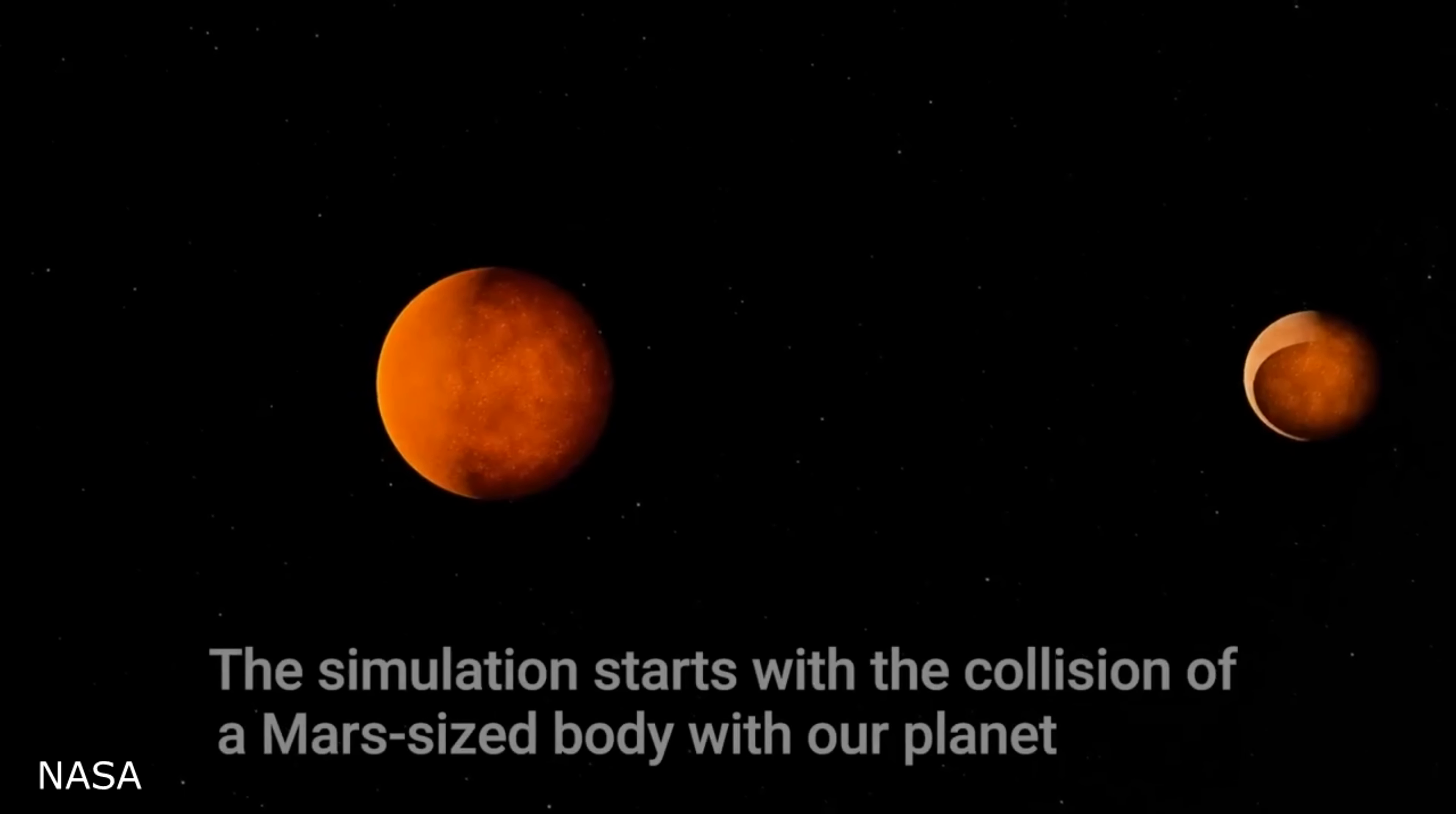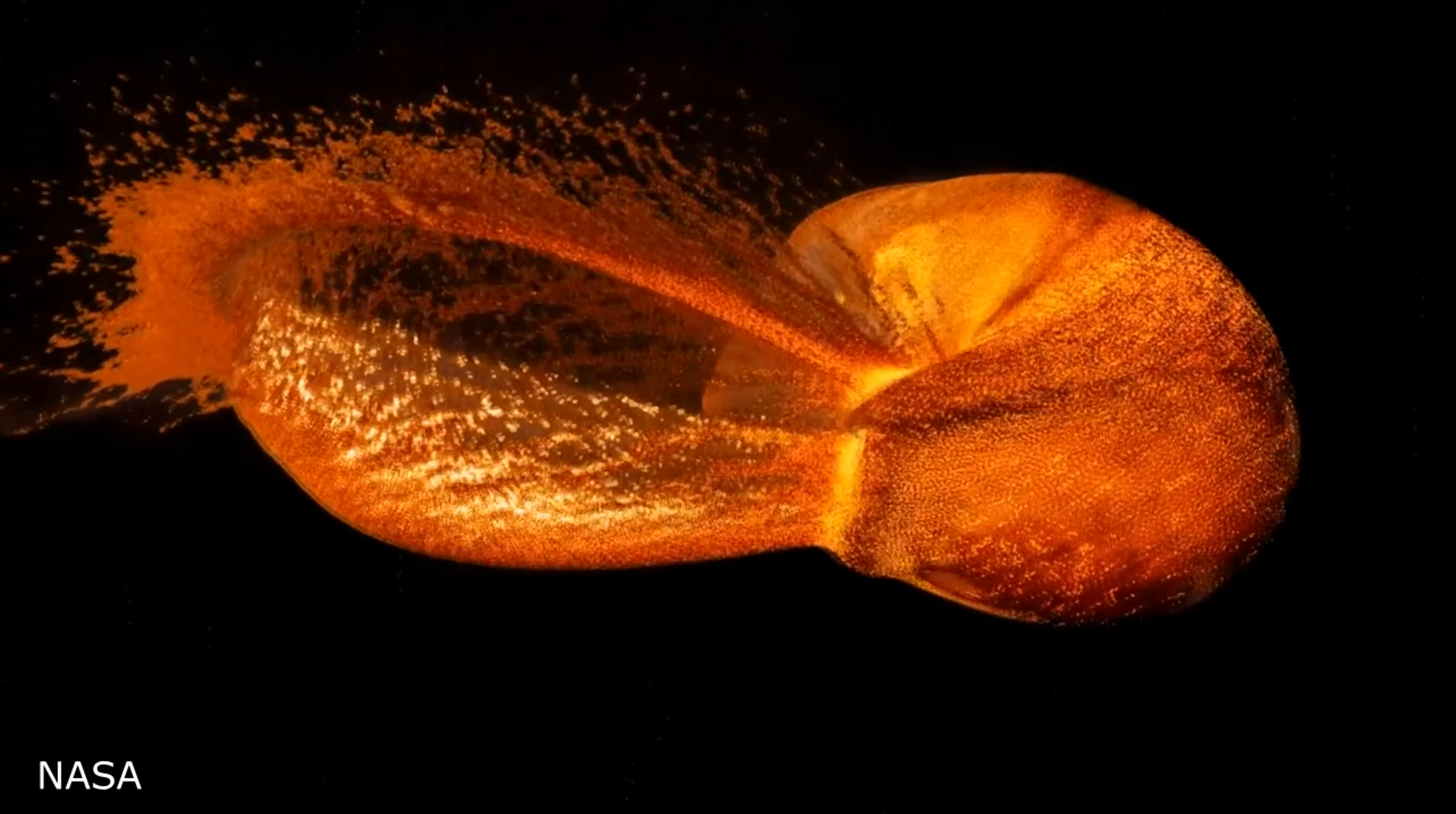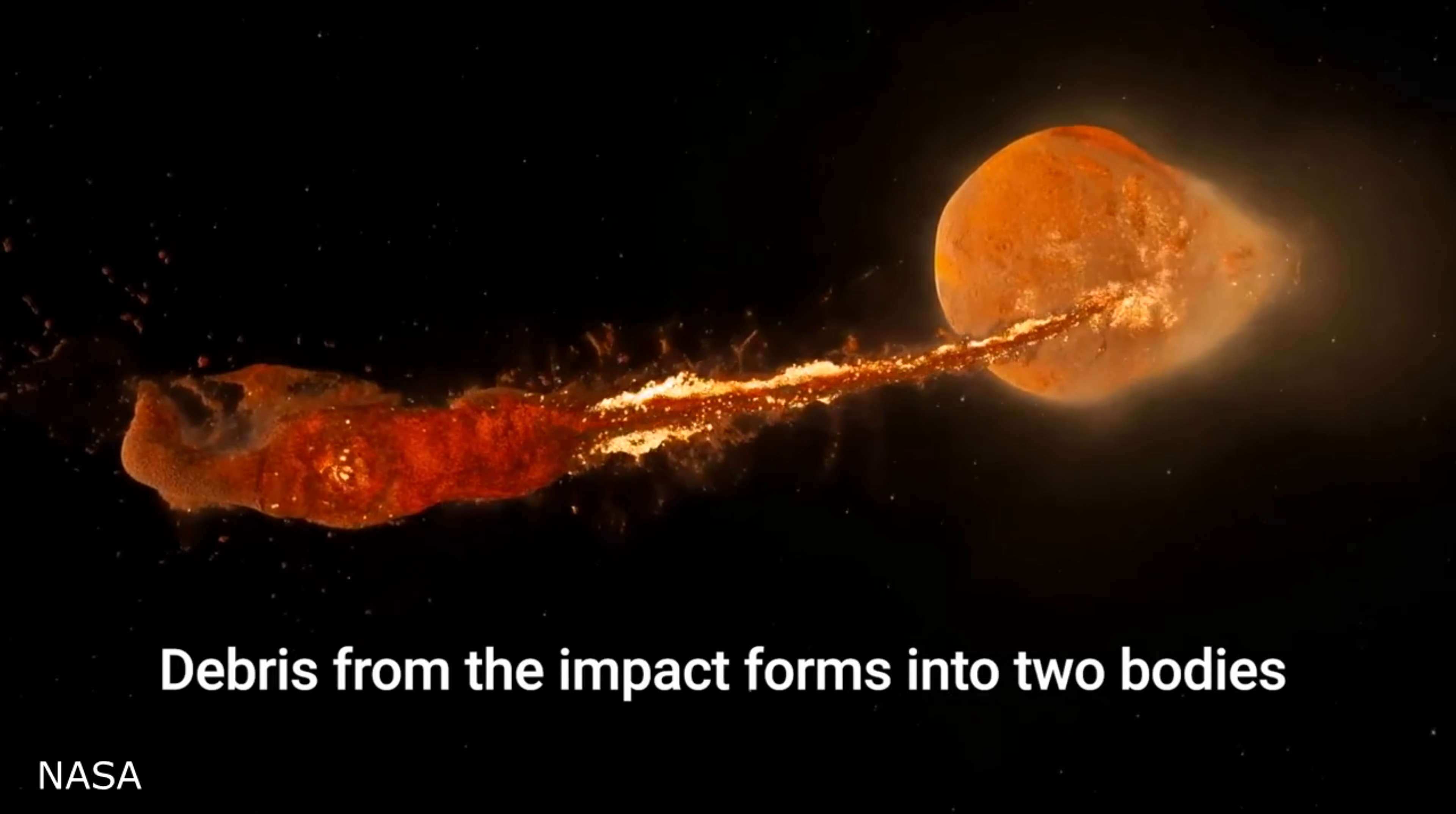This is a simulation showing how we think the moon was formed. It's believed a Mars-sized object collided with Earth billions of years ago, which resulted in the creation of the moon. At these scales, when planets collide, they almost act like liquids.